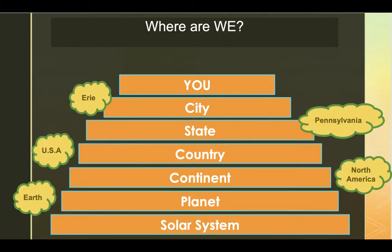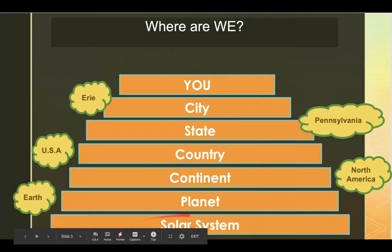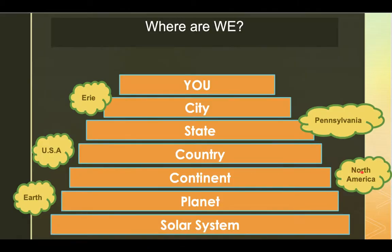Let's review our where are we chart. We already know about our solar system and where we are in it — we live on planet earth. On planet earth, we live on the continent North America. On North America, we live in the country United States of America. On the United States of America, we live in Pennsylvania. And in Pennsylvania, we live in the city of Erie. And then there's you — you are in your home where you live on planet earth.